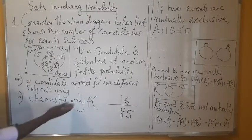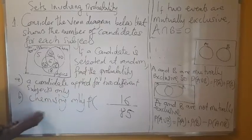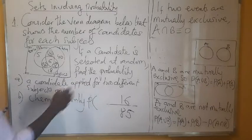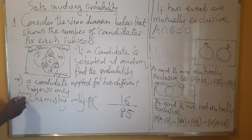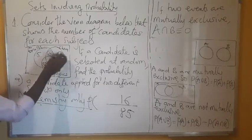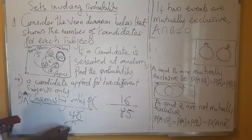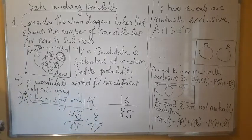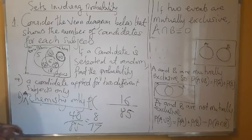Find the probability of candidates that applied for chemistry only. So where is chemistry? Chemistry is here. Those that applied for chemistry only, they are 40. So we have 40 over the total, which is 85. 5 into 85: 5 into 40 is 8, 5 into 35 is 7. So that simplifies accordingly.